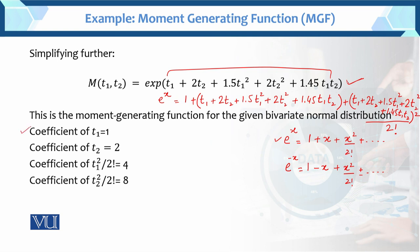Now what do we need? We need the coefficients of t1, t2, t1²/2!, and t2²/2!. These coefficients tell us the moments. So first: the coefficient of t1 — what is the coefficient of t1? It is 1. In the x² term, t1 appears squared, so t1's coefficient comes only from the first portion.